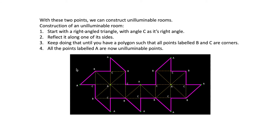Once we know these two things, we can construct unilluminable rooms. First, start with a right angle triangle ABC with C as its right angle. Take any side and reflect along that side. In the new polygon, choose any triangle forming the outer edges and reflect along one of its sides. Repeat these steps as desired, but the key condition is that the points labeled B and C must be corners. If your polygon satisfies that condition, it's an unilluminable room and all points labeled A will be unilluminable points.